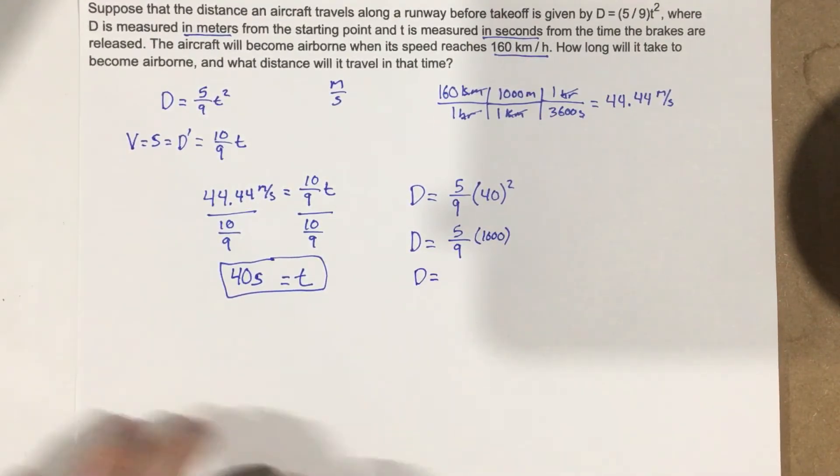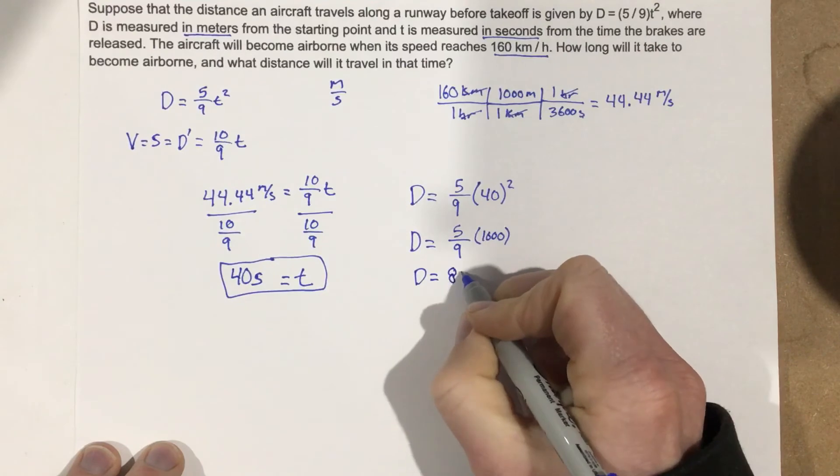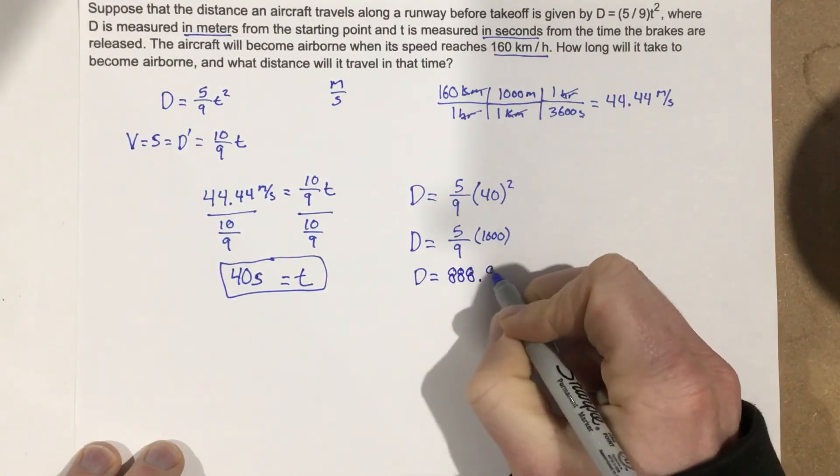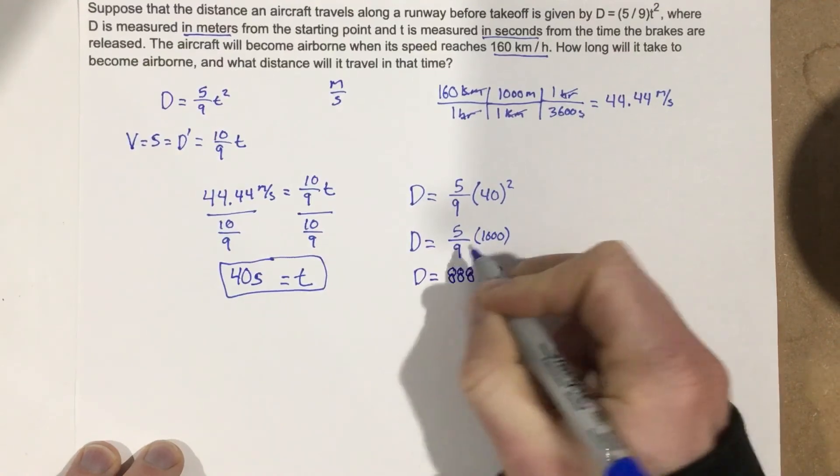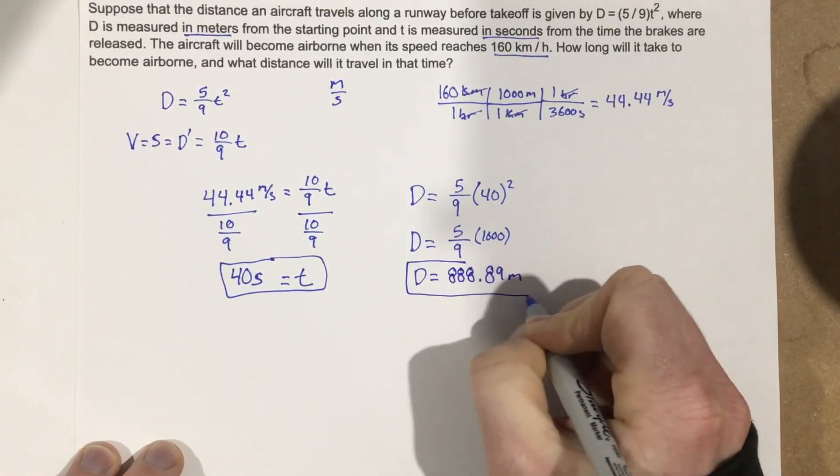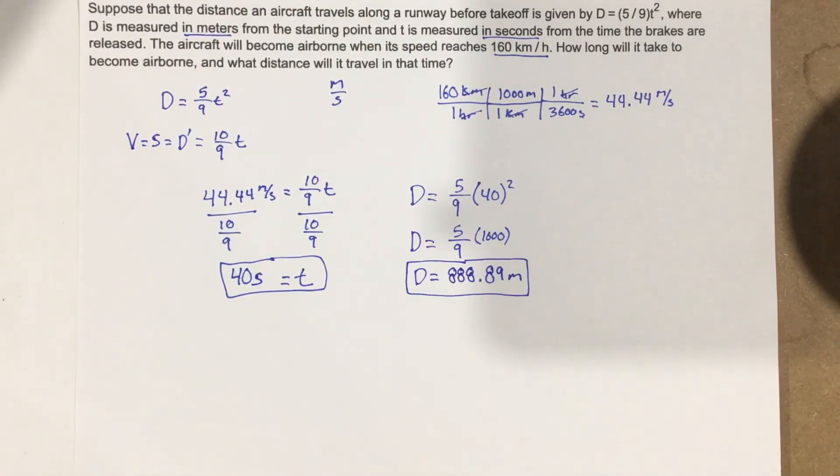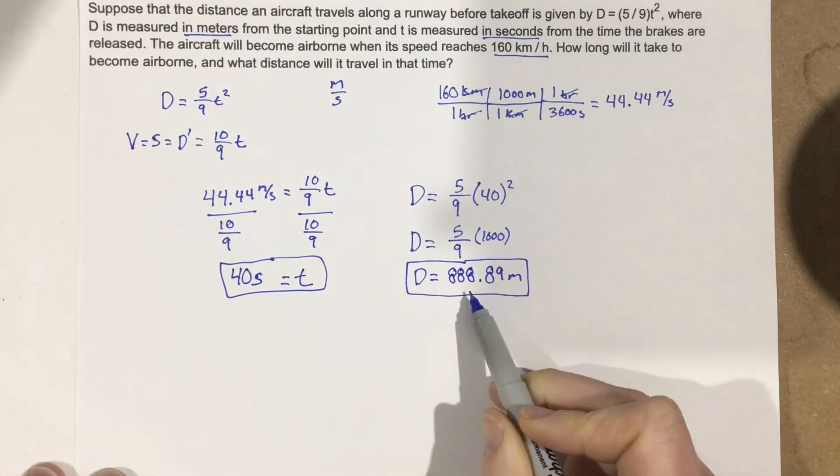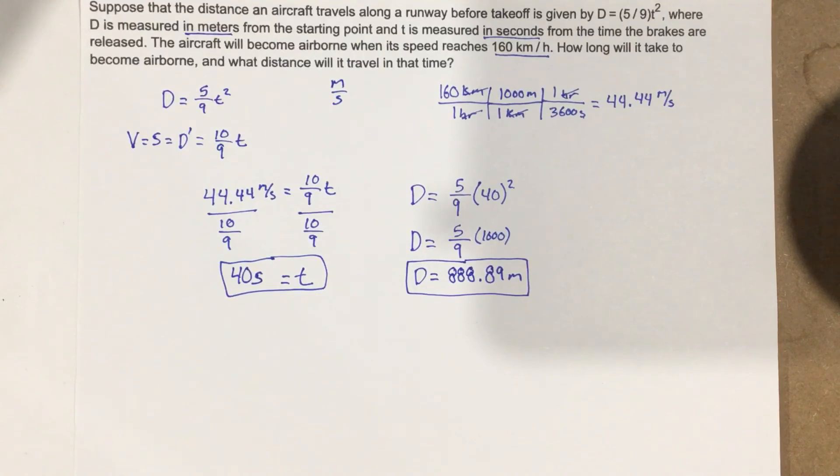So D is going to equal 888.89 meters. So that's going to take us quite a while too. That's going to take over, I mean that's basically 9 football fields for us to travel in this aircraft before we actually take off. That's a long long ways.